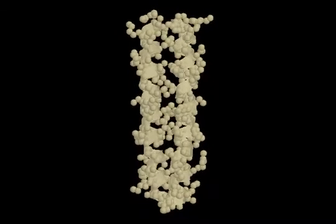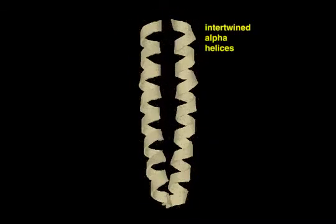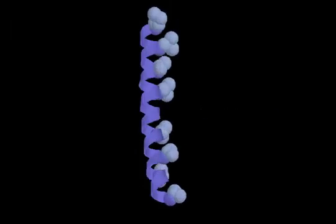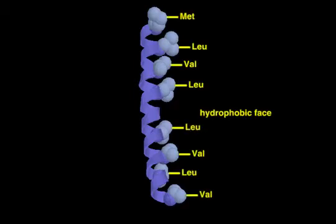In a typical coiled coil, two alpha helices wrap around each other to form a stable structure. One side of each helix contains mostly aliphatic amino acids, such as leucines and valines, while the other side contains mostly polar residues.